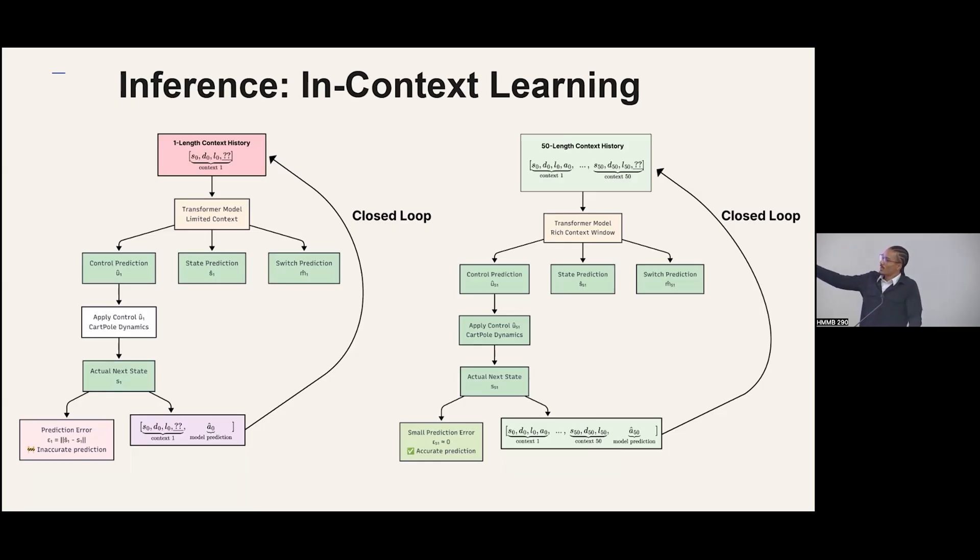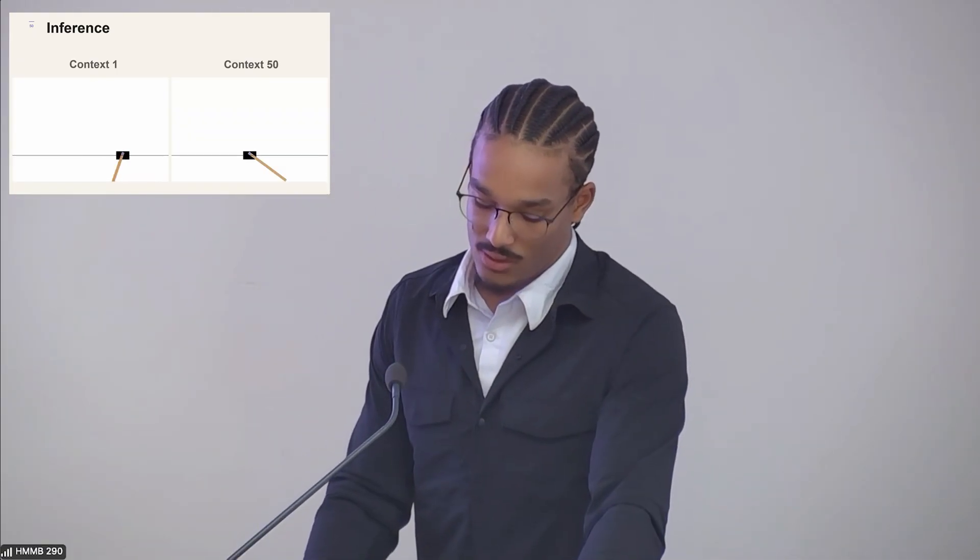And in the one-length context history where it's only given the initial condition, it has to try to learn the entire dynamics of the system because it's a new system that's not seen in training with new parameters, so new cart mass or length of the pole. And it has to try to learn that just from making actions. So that's more of an action-reaction type of situation, and that's not going to work as well because if the first action has a lot of error, then that will just compound as it goes.